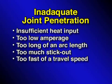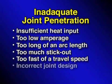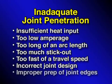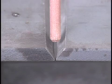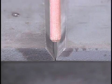Other contributing factors are incorrect joint design or improper preparation of the joint edges. If a root opening is too tight, or the groove angles are not wide enough, the weld metal may be restricted, causing lack of penetration at the root.